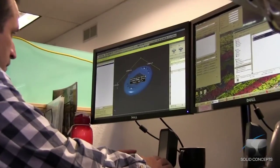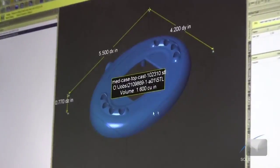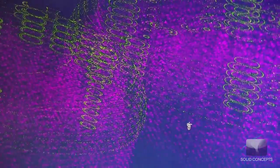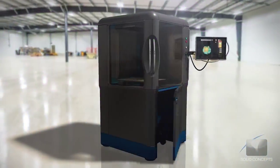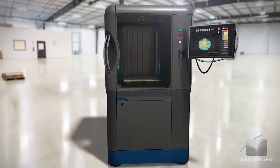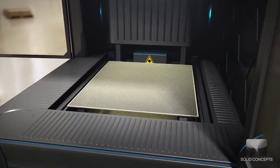The SLA process begins when CAD data is sliced into thin cross sections or layers, typically about six thousandths of an inch thick. This data is then transferred to an SLA additive manufacturing system containing a vat of UV curable photopolymer.